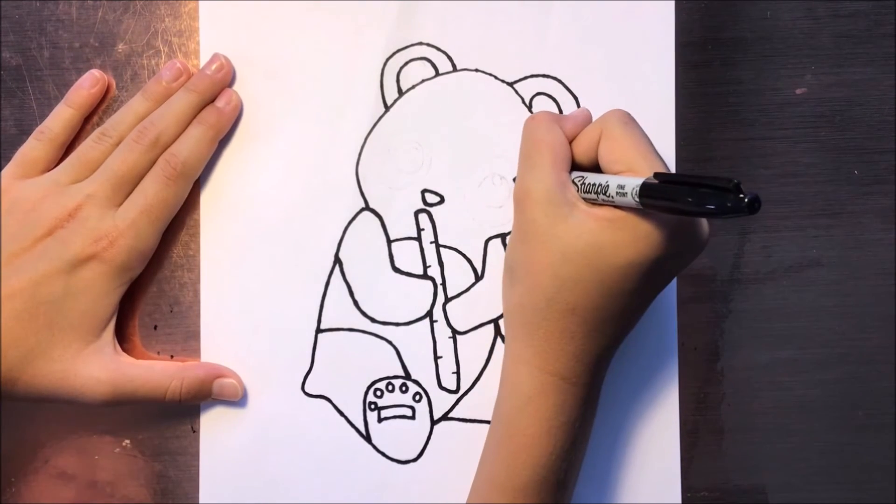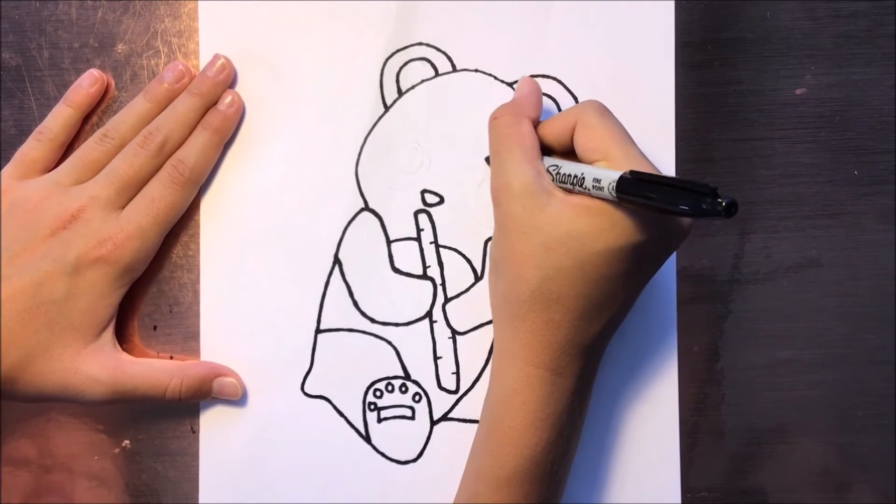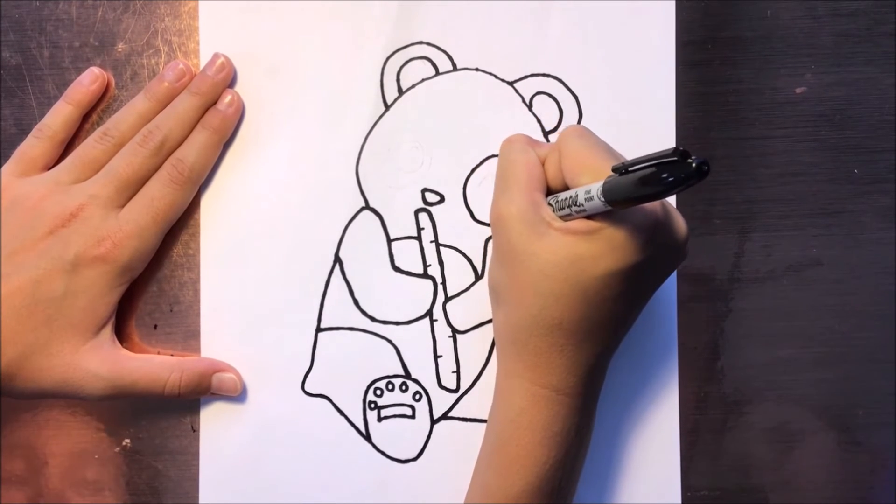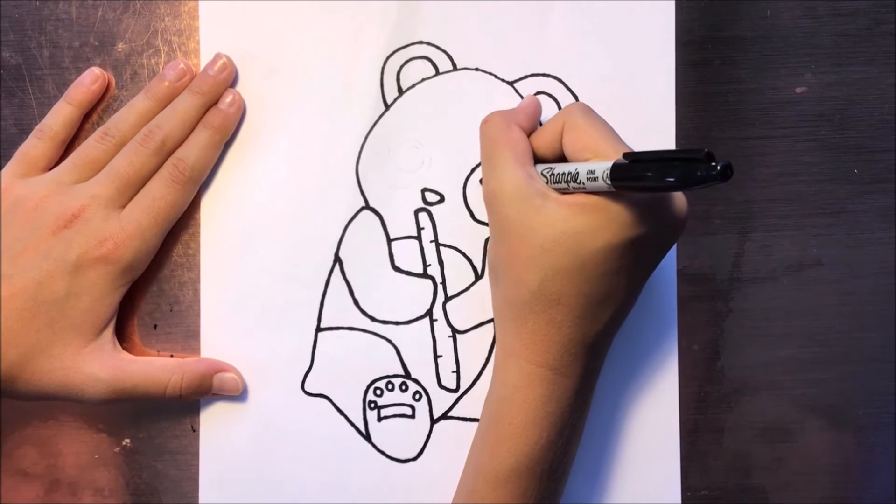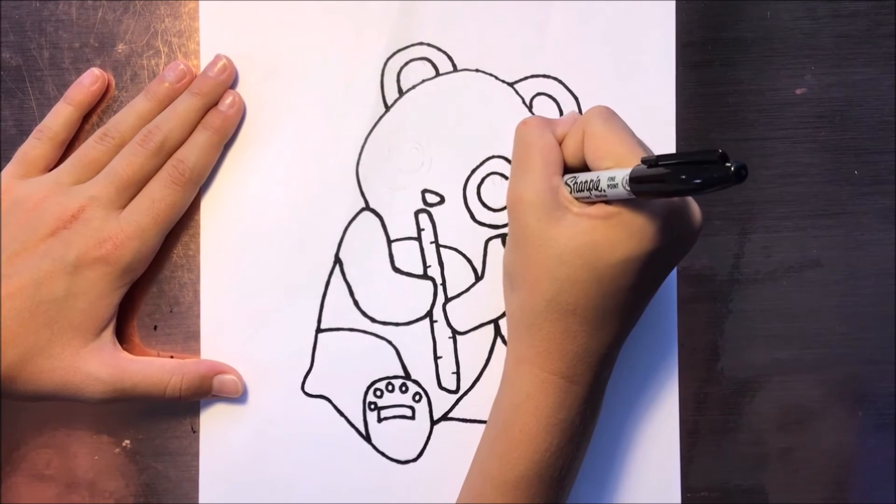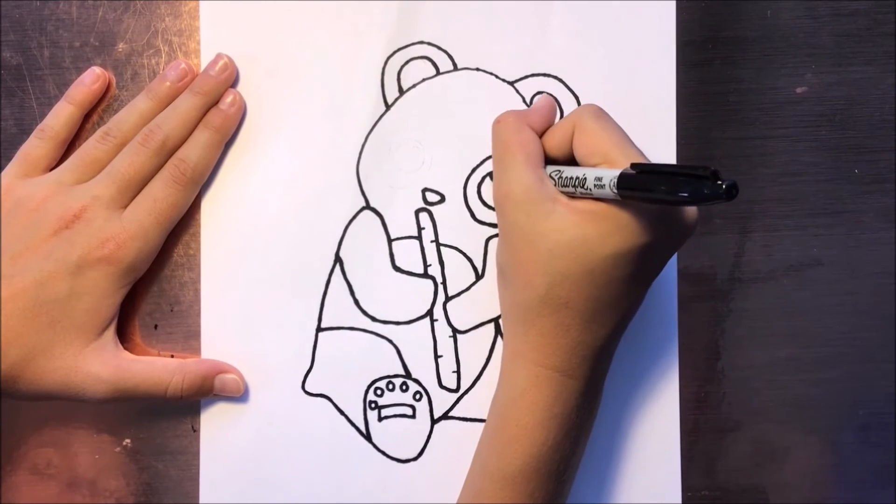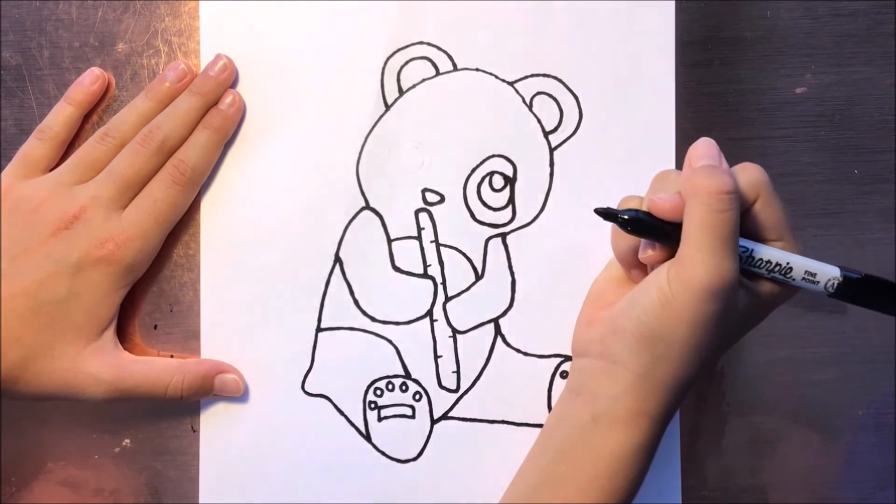Now the eye. We're just going to have a patch here that looks like a nut sort of shape. Then inside, we're going to do a big circle like this—a big circle inside like that.